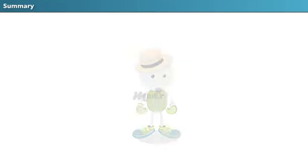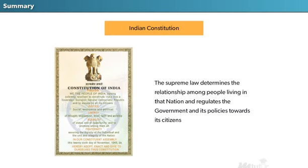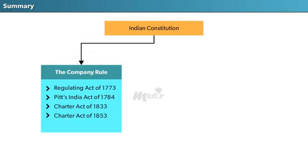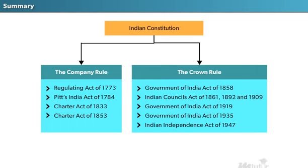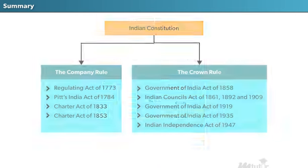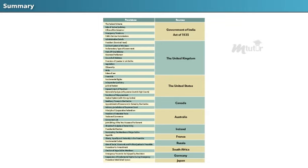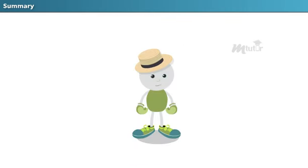Summary: The Indian Constitution is the supreme law that determines the relationship among people living in the nation and regulates the government and its policies towards its citizens. Our Constitution came into practice on January 26, 1950. It is the result of a set of acts under the Company Rule spanning 1773 to 1853, and the Crown Rule formulated from 1858 to 1947. The sources from which we got the various features of the Indian Constitution are tabulated on screen. That's all — see you in our next lesson. Bye.